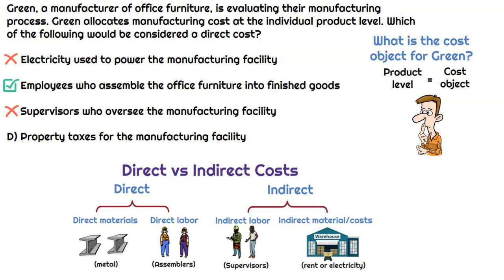Property taxes for the manufacturing facility are the same as electricity — necessary for the overall manufacturing process, but we can't say these property taxes relate to a specific product. It's just overhead. Anything that is manufacturing overhead is always going to be an indirect cost or an indirect material.